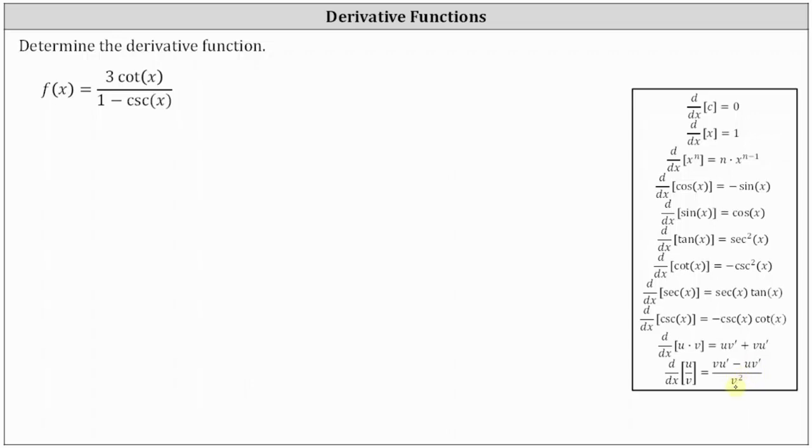So notice in our case, u is equal to three cotangent x, and v is equal to one minus cosecant x.